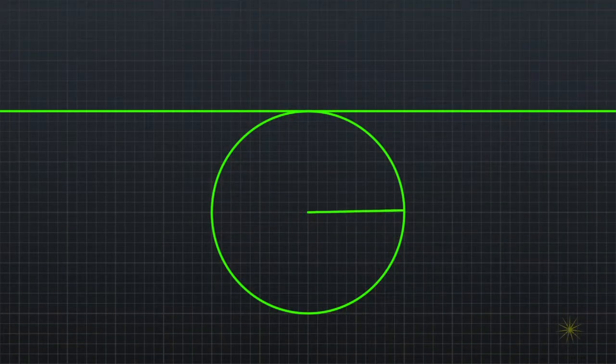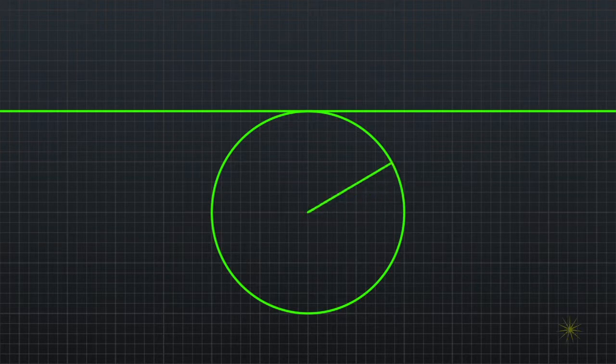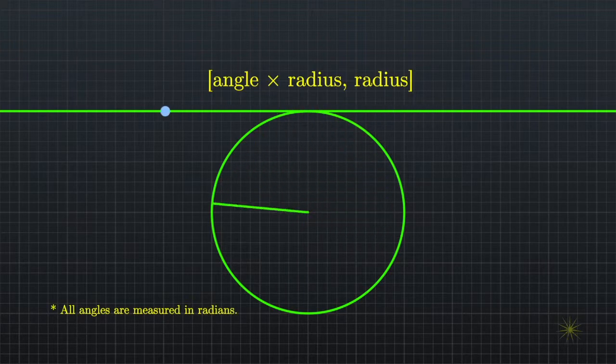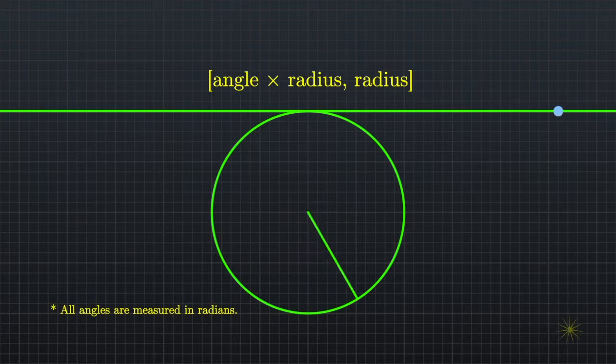And let us start our story with a wheel rolling along a line. We'll use these blue dots to show the line as it passes by our wheel. The position of the blue dots is governed by this equation. The position along the x-axis is the angle times the radius of the circle. The position on the y-axis is simply the radius.